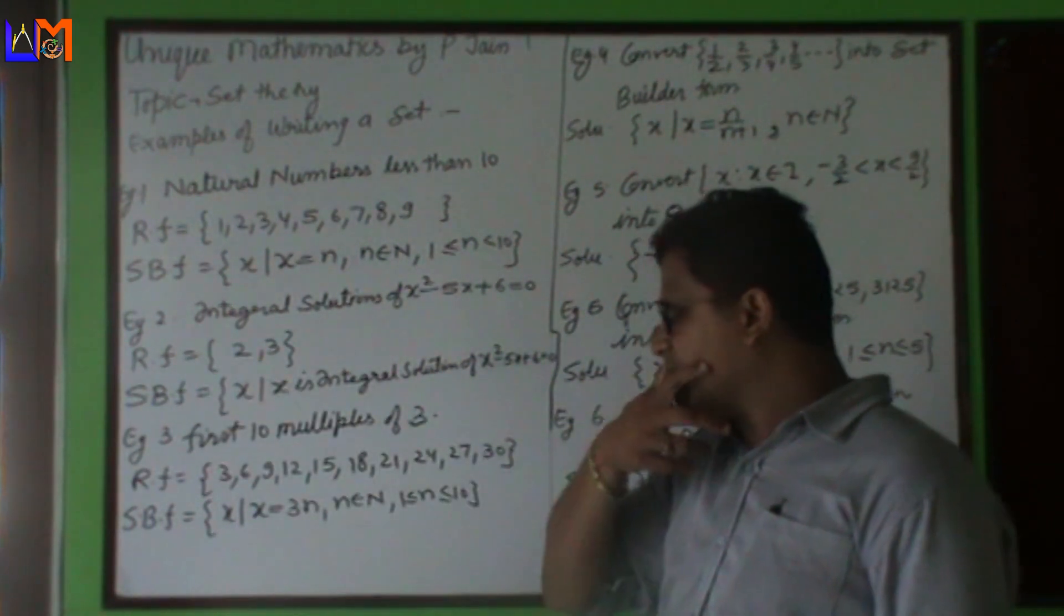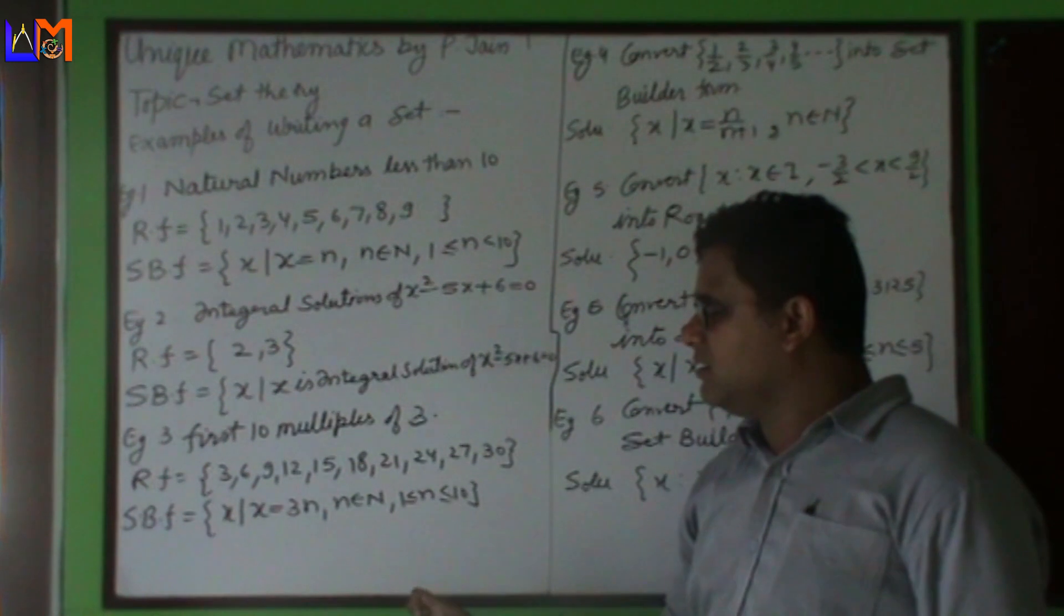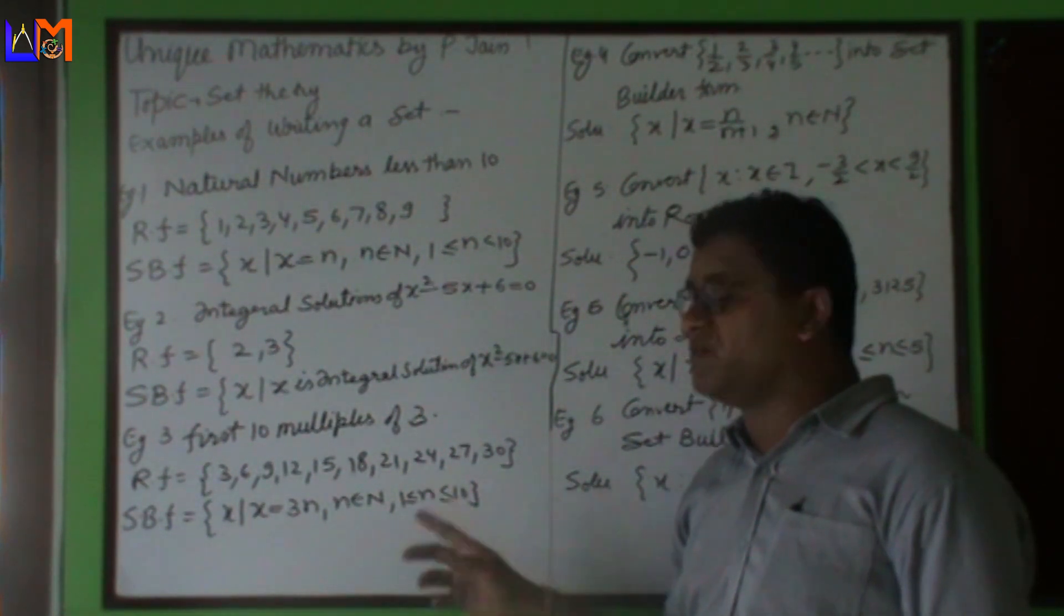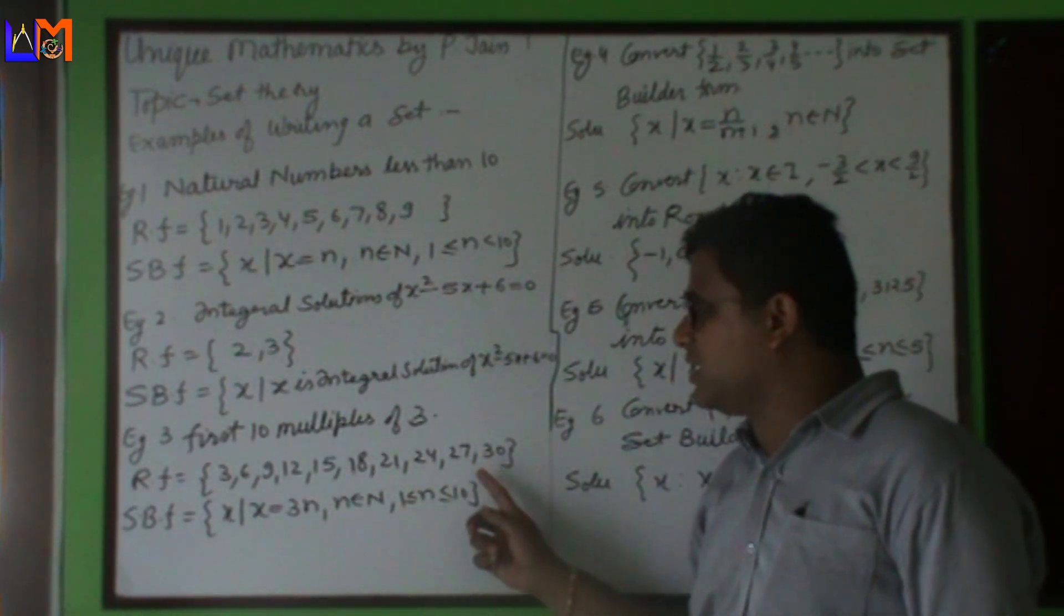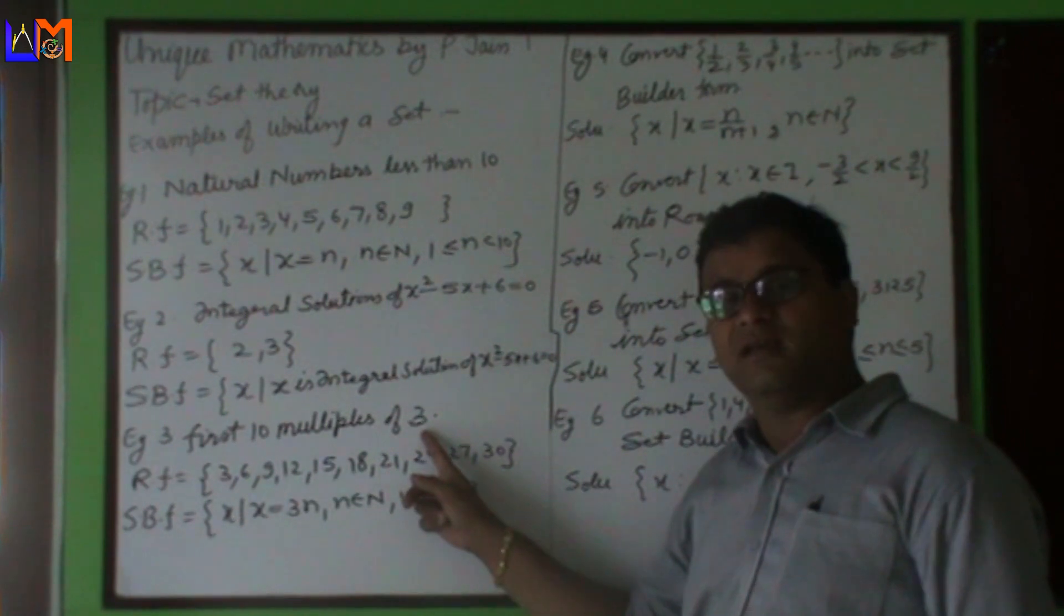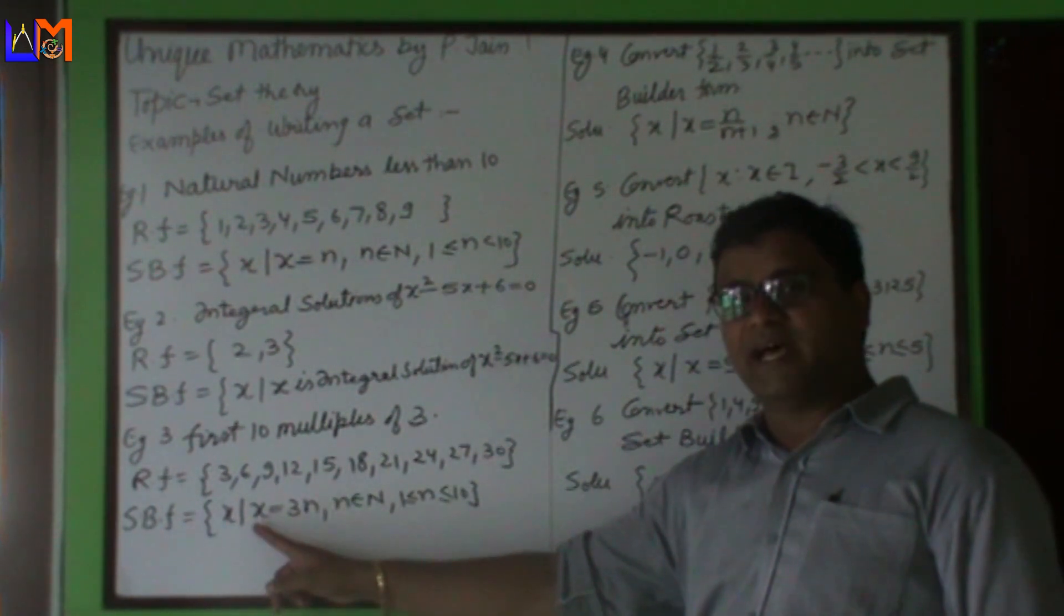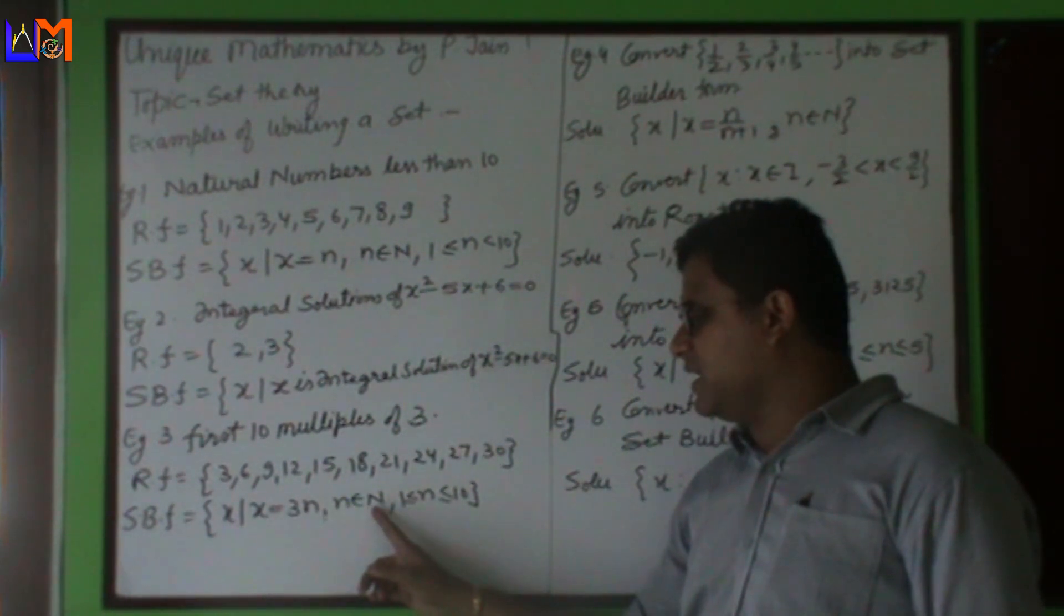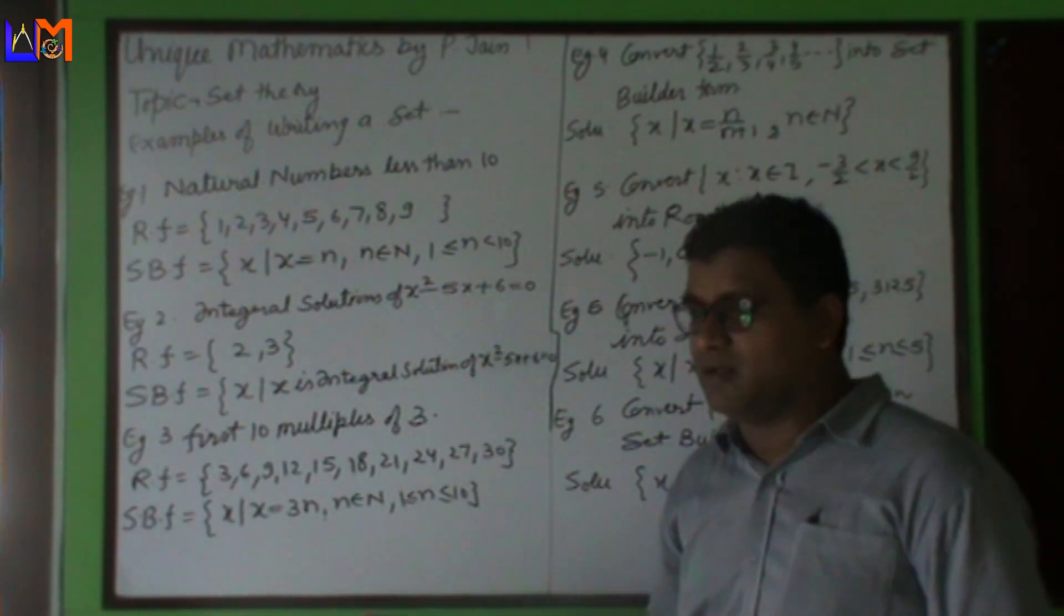Third example: first 10 multiples of 3. In roster form we will write all the multiples: 3, 6, 9, 12, 15, 18, 21, 24, 27, 30. In set builder form we will write: x such that x is 3n, n is a natural number belongs to N, and the value of n lies between 1 and 10 including 1 and 10.